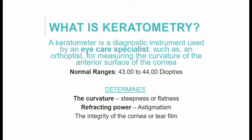So what is keratometry? A keratometer can be used by eye specialists in measuring the curvature of the anterior surface of the cornea, particularly for assessing the extent and axis of astigmatism. In the average eye, keratometry readings — also known as K readings — range within 43 to 44 diopters. Anything less than 40 and more than 47 diopters are considered unusual, therefore should be reconfirmed and retested.